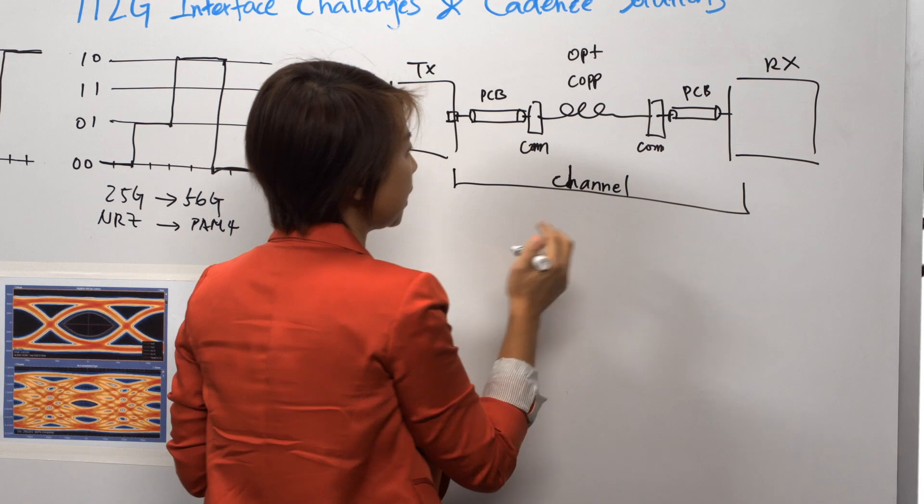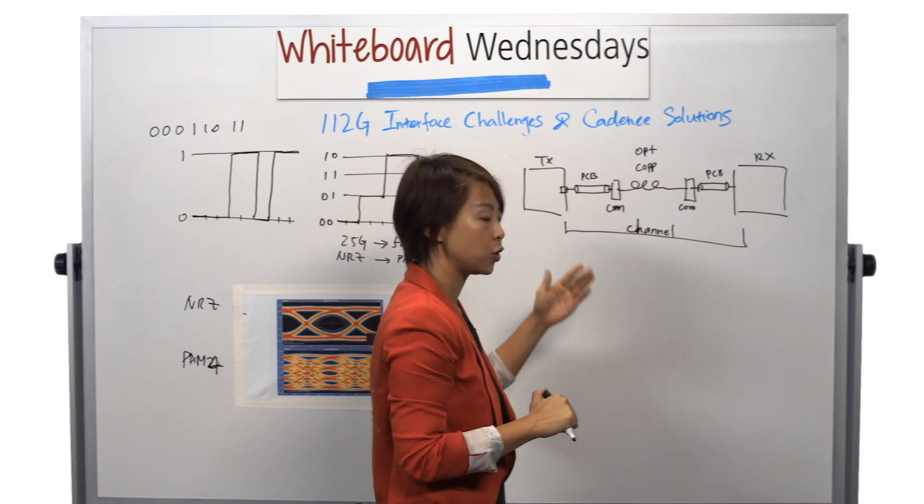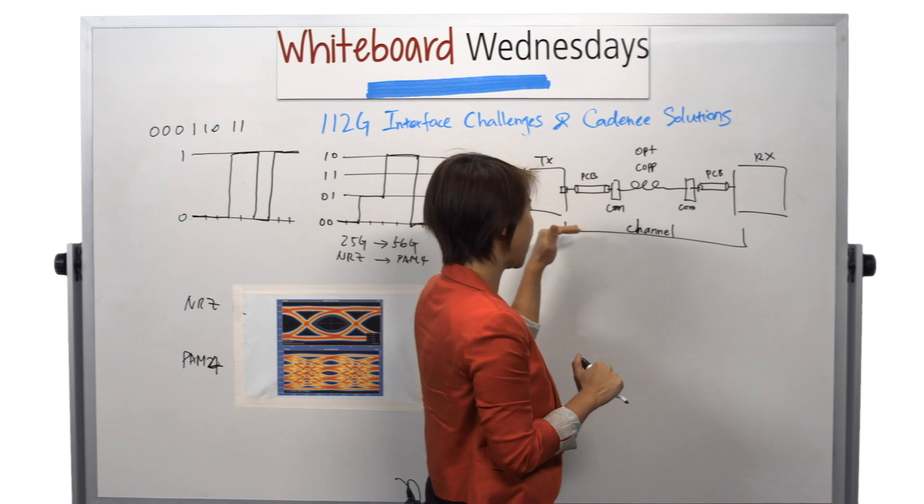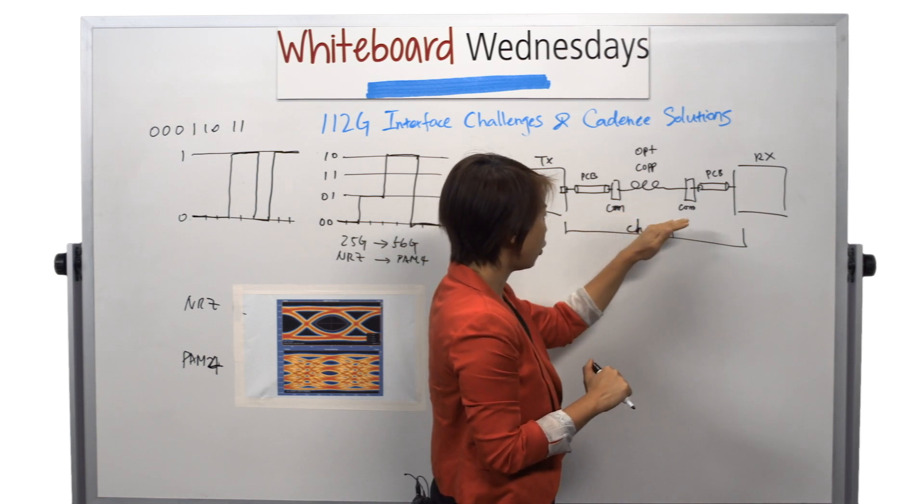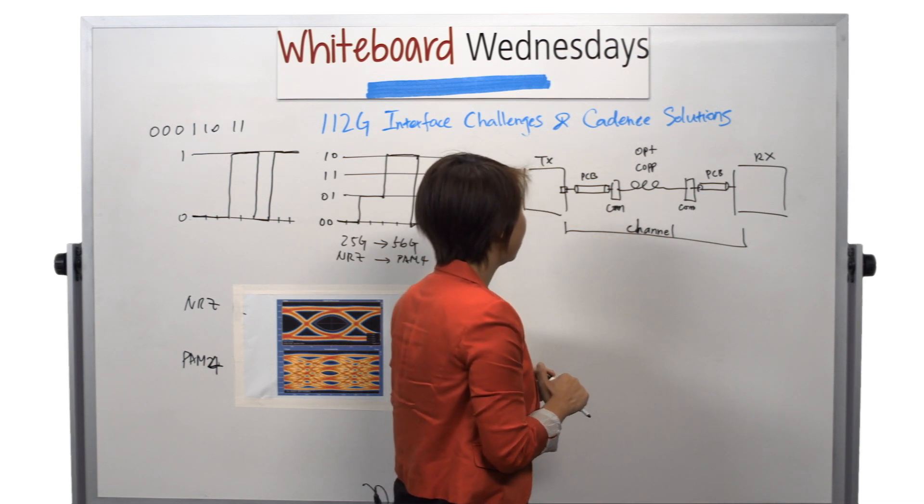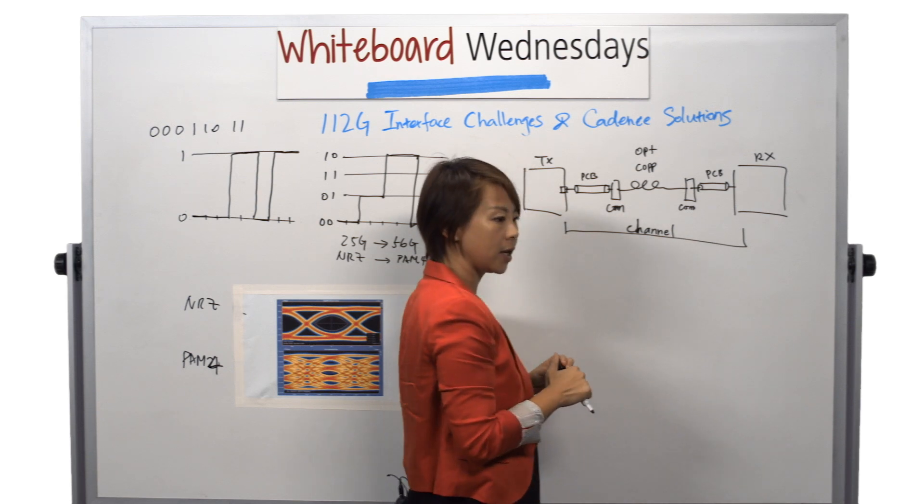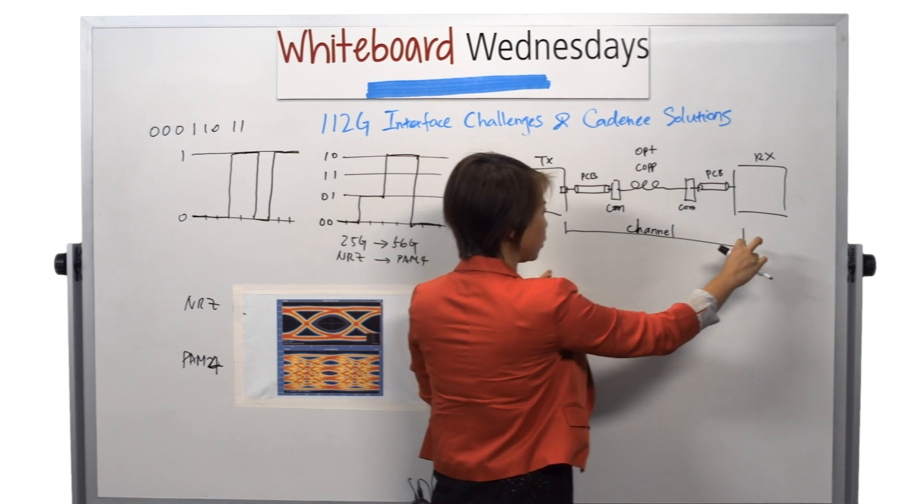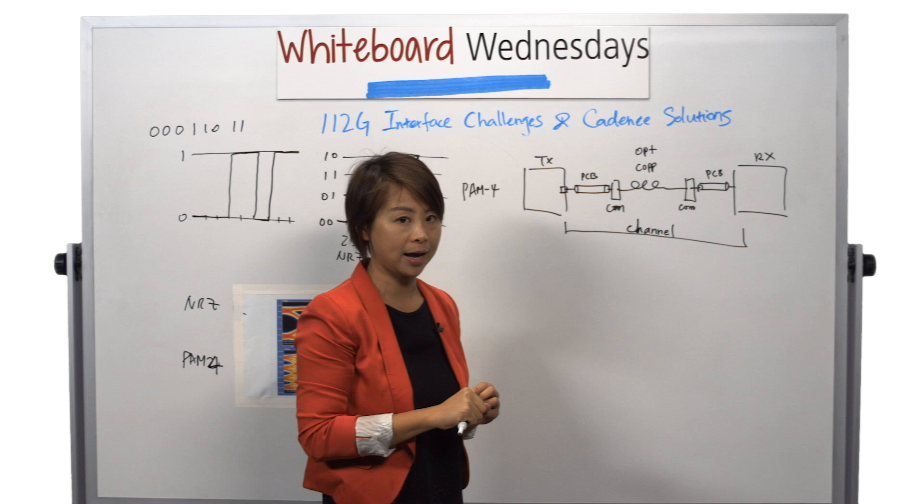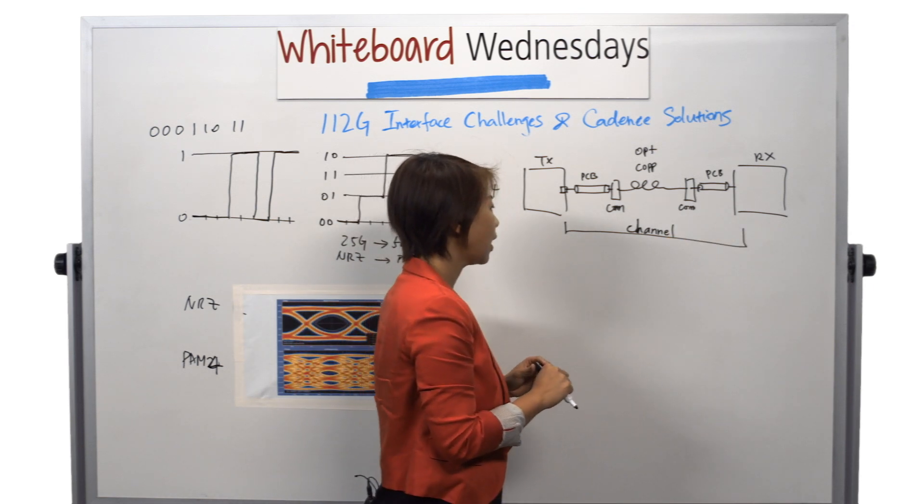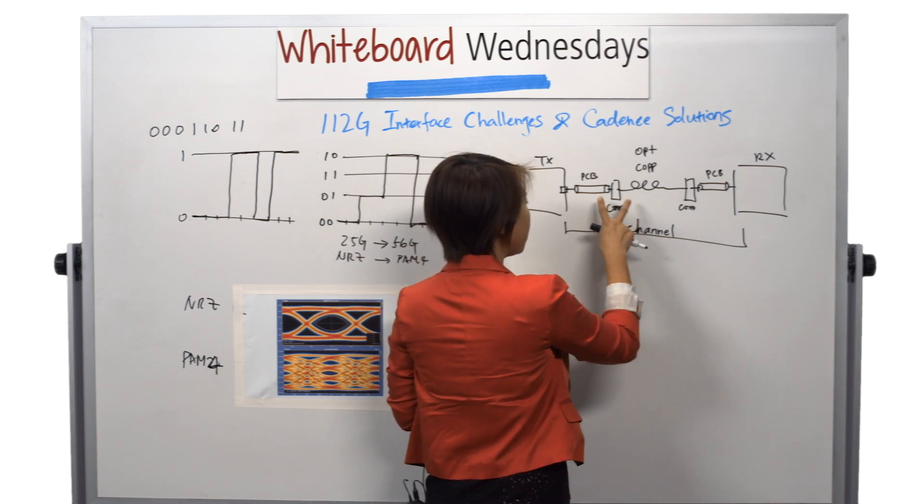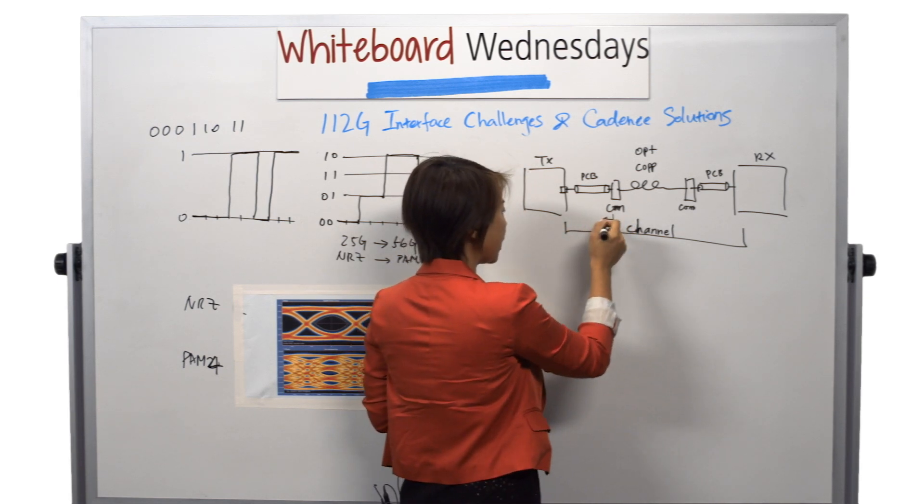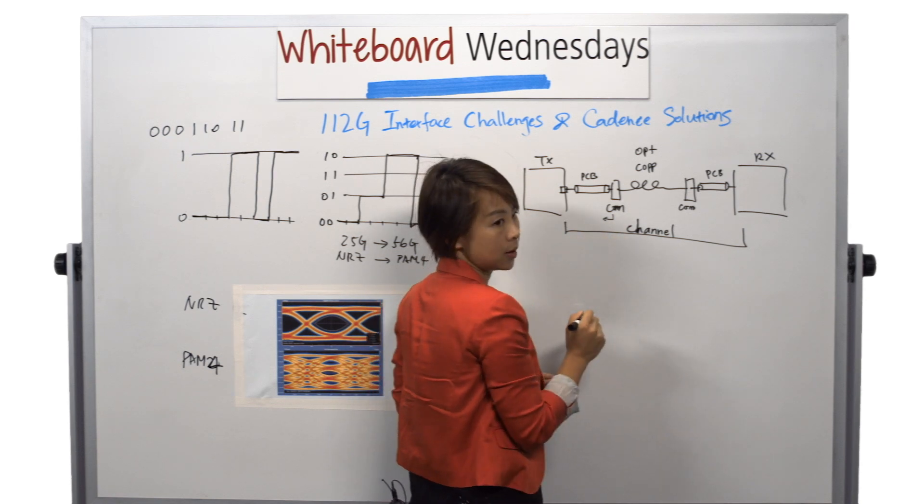For long range channel especially, there are two issues in transmitting the signal over the channel. Number one is that the signal will get attenuated over this channel. So the attenuation could be as much as 35 dB, which means the signal amplitude will shrink by about 25x when they receive at the receive end. Another issue here is whenever the signal hits a connector, because of the impedance mismatch, there's going to be some energy gets reflected. So you will get reflections which causes ripples on the receive signal.